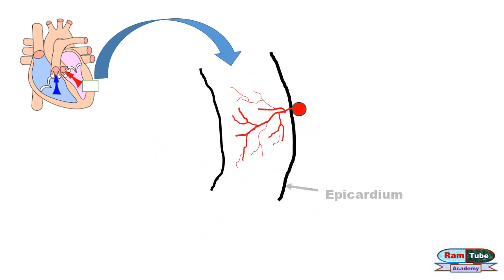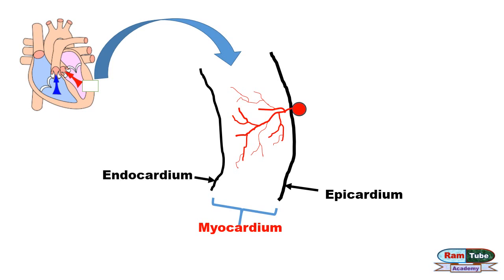The heart wall has three layers: the outermost layer is the epicardium, the middle one is the myocardium, and the innermost is the endocardium. For the normal functioning of the myocardium, it needs nutrients and oxygen which are supplied by the coronary arteries.